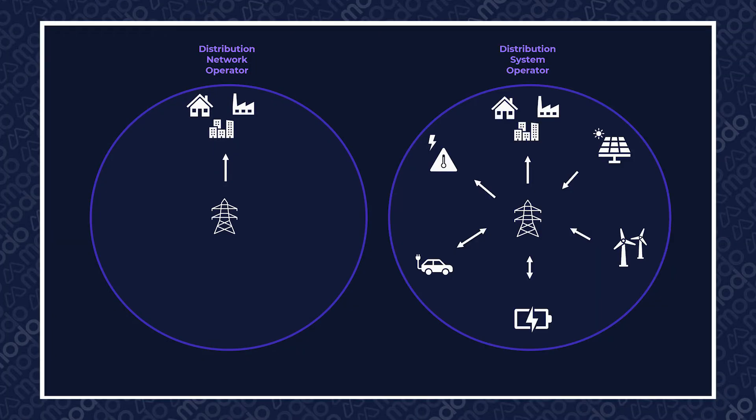This is a major reason for the transition from distribution network operators to distribution system operators — you can find out more about that in our Energy Academy video on DNOs. Local flexibility will be required to enable local balancing of supply and demand, such as shifting away energy use from peak times.